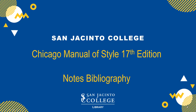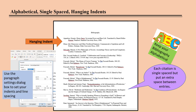Creating a Bibliography in Chicago Manual of Style 17th Edition Notes Bibliography System. Your bibliography begins on a separate page at the end of your research paper. The word bibliography is centered at the top of the page with two empty returns between it and the start of your citations.